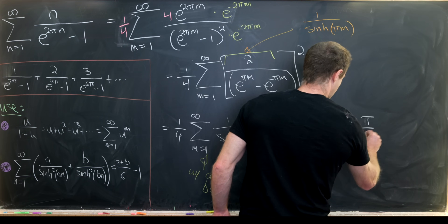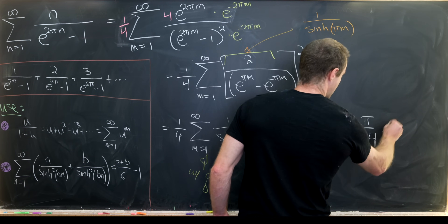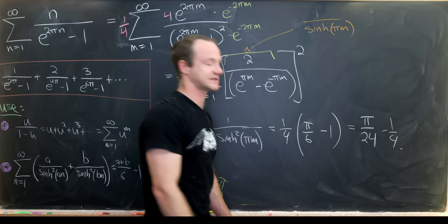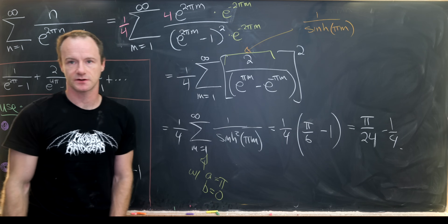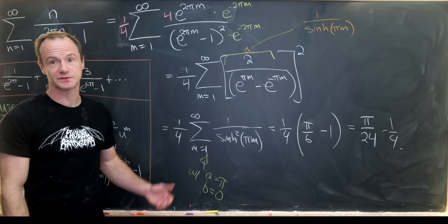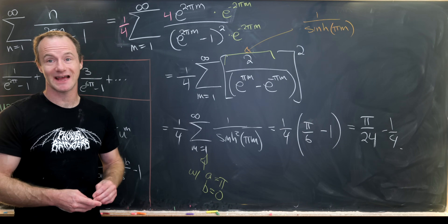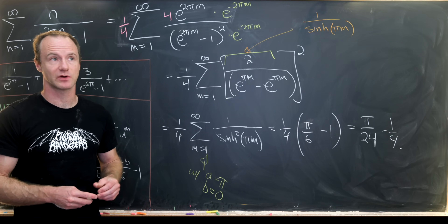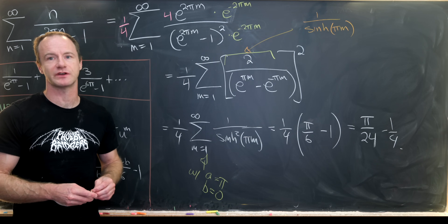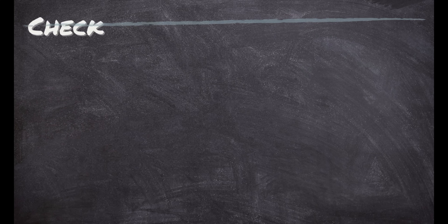In the end, we get π over 24 minus 1 quarter as the final answer. If you've liked this video, maybe consider subscribing. I've done a lot of other technical summation problems on the channel — there should be one on the screen right now for you to check out.